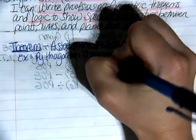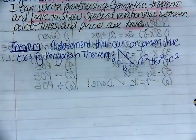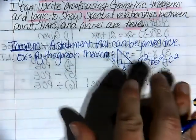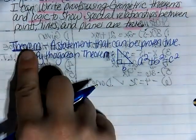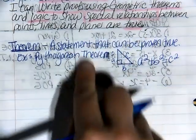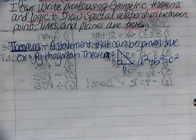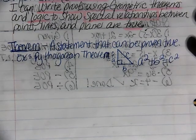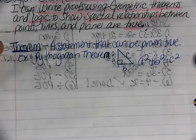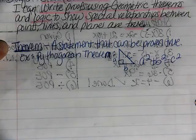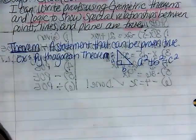The Pythagorean theorem is a statement that we can prove true. The reason why it's a theorem is because maybe there exist some triangles that we haven't come up with yet where this statement is false. But in general, it has been proven true time and time again, and therefore it is considered a theorem.